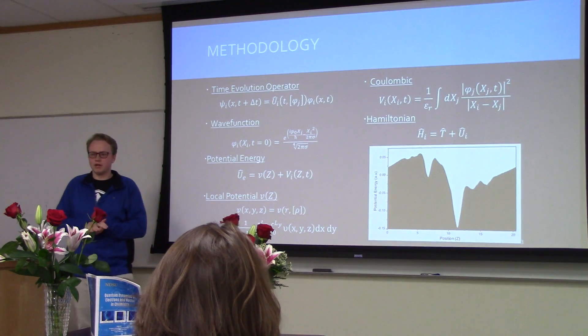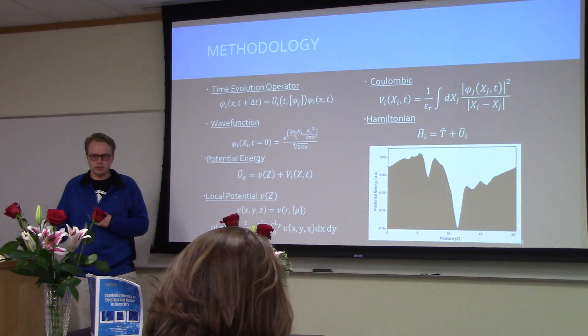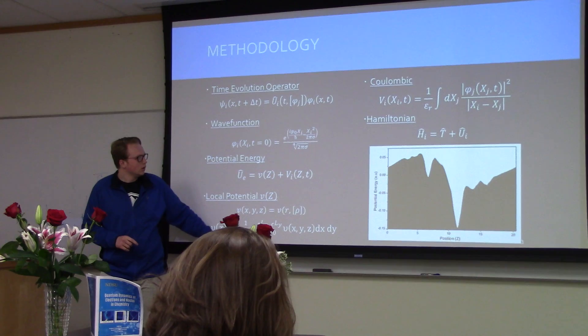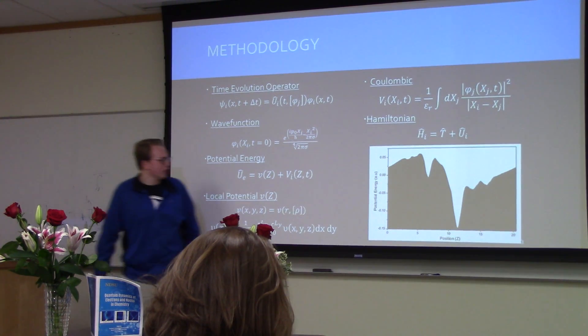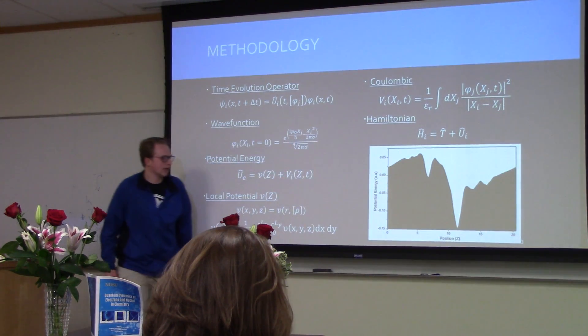It is collapsed into one dimension through integrating over the X and Z spaces and then normalizing it. This is a potential where the iron is at about six and the Prussian blue is at about eleven.